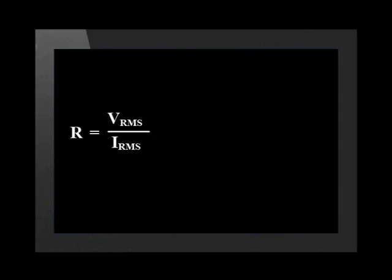That's not all — Ohm's law also works for RMS calculations. The equation works just as well for alternating current. The resistance of an alternating current appliance is still equal to the RMS voltage divided by the RMS current.